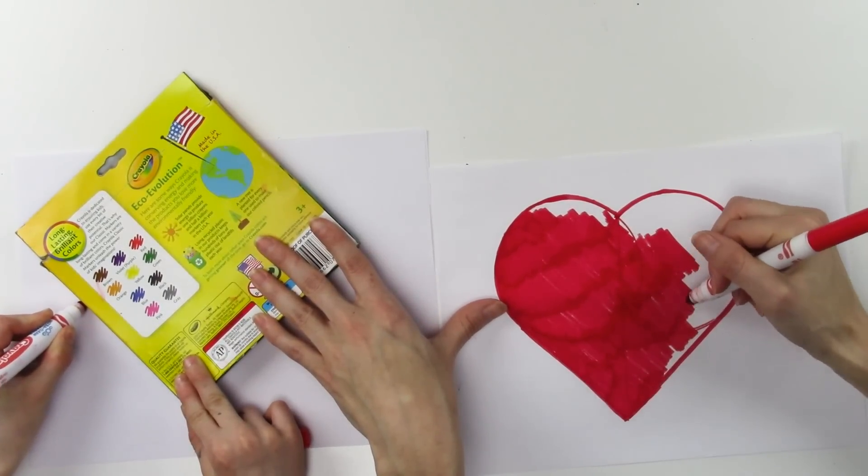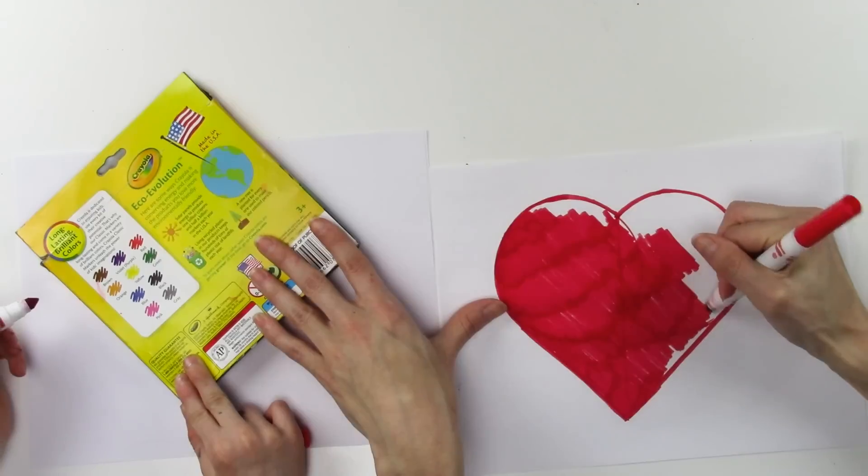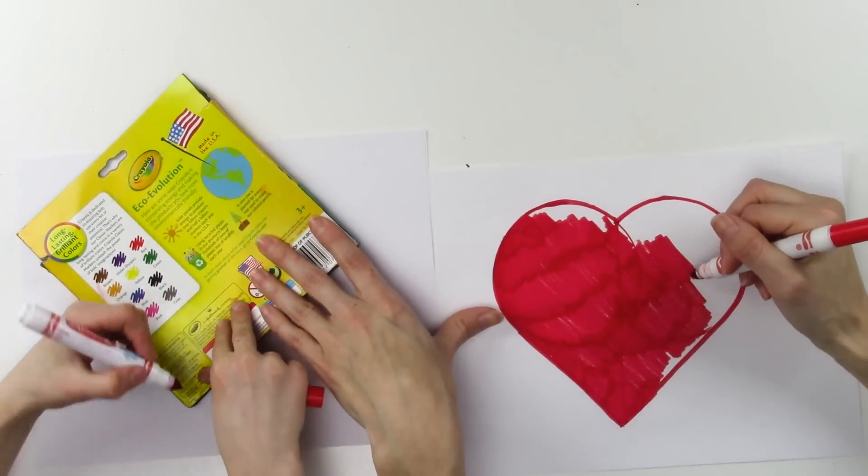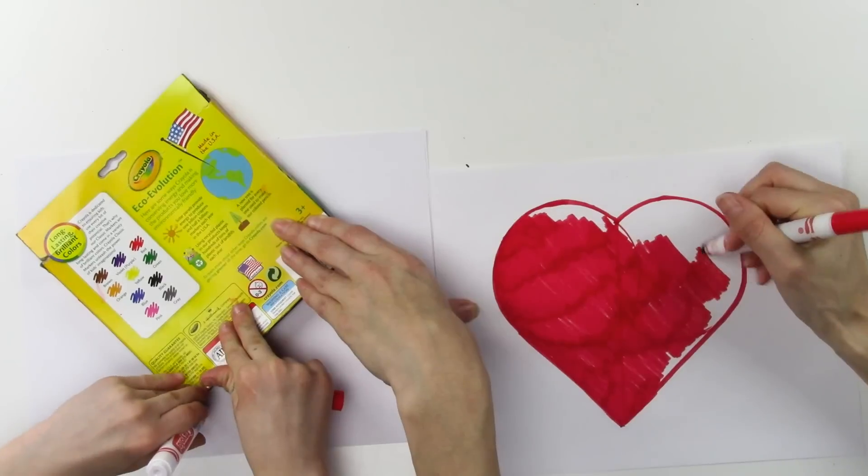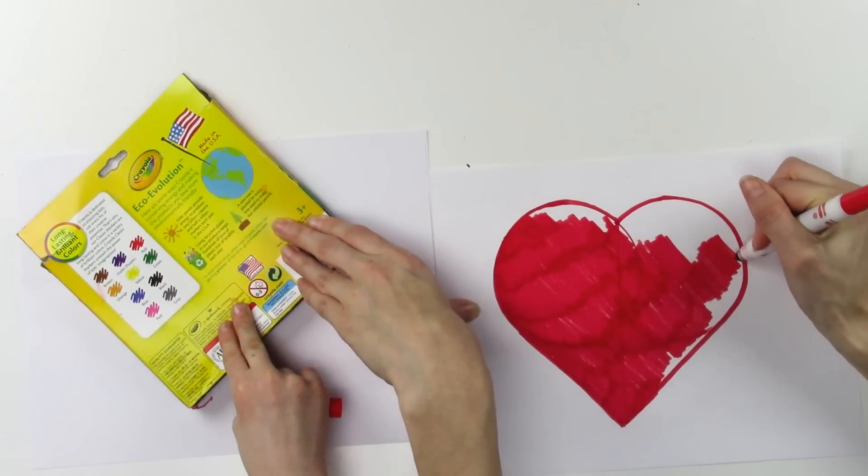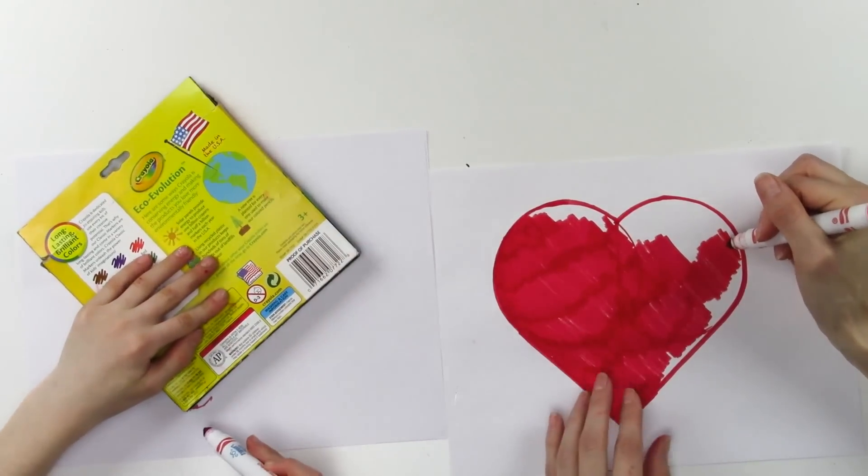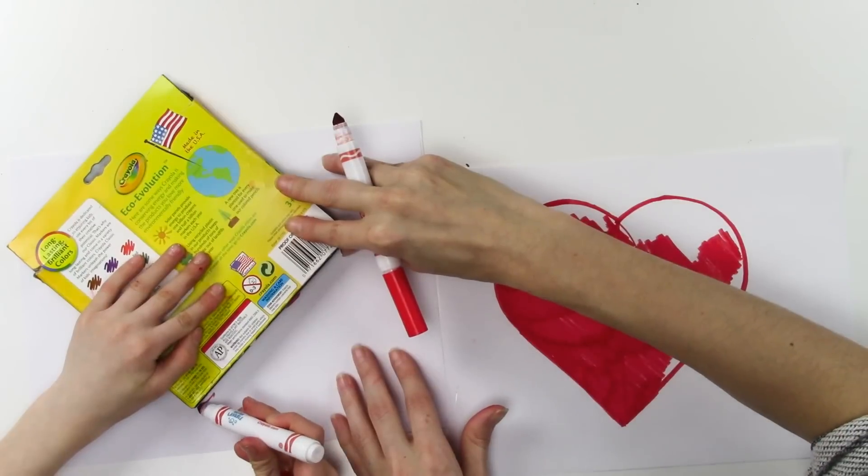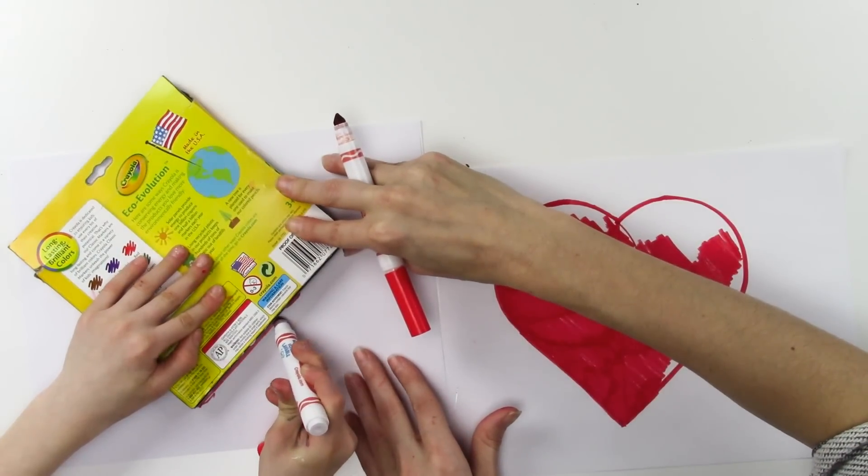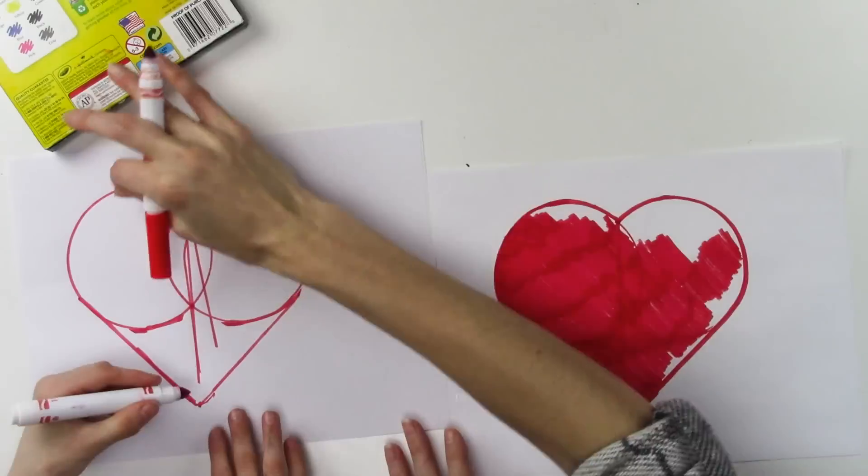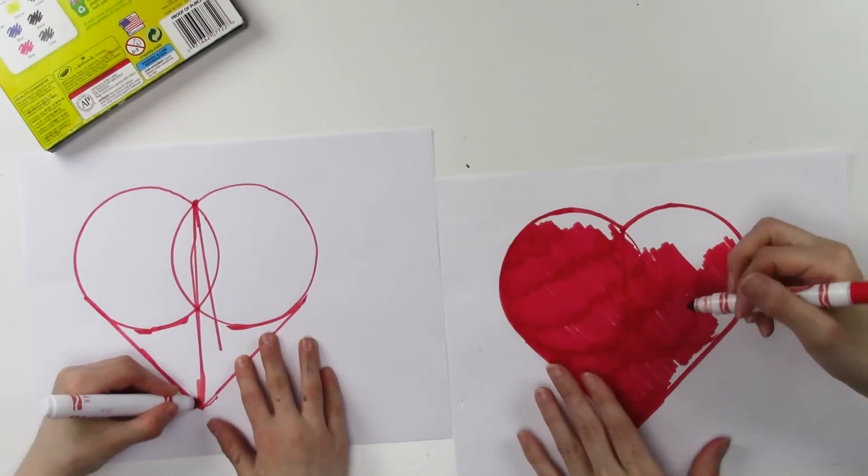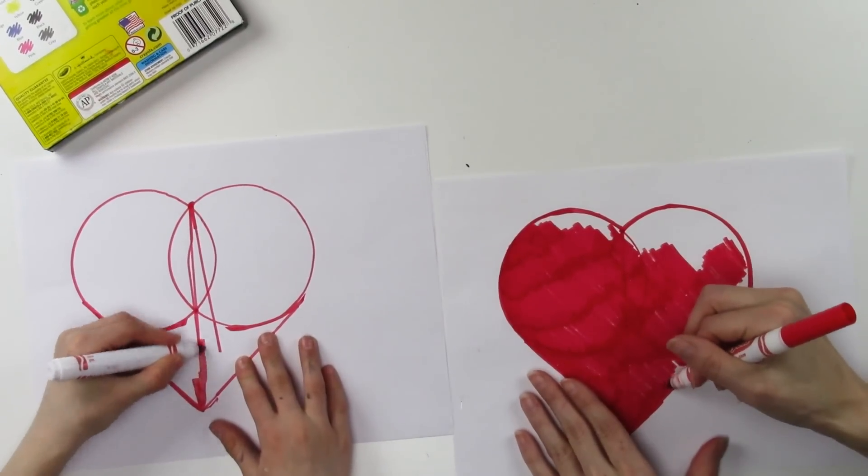Because if it moves then you mess up your heart. That's one of the key things, hold it down real good. So let's just go that way. There you have your perfect heart. There you have the perfect heart, just like my dad. You can color it in.